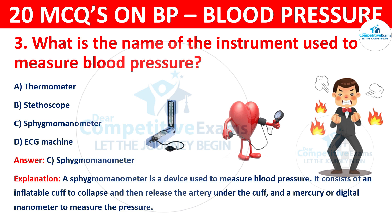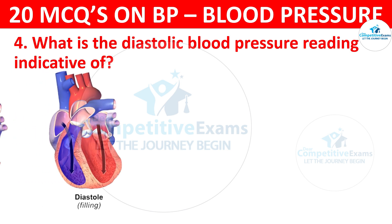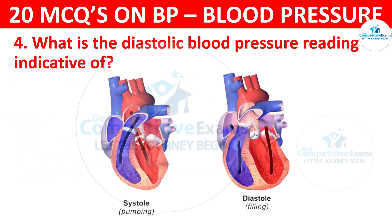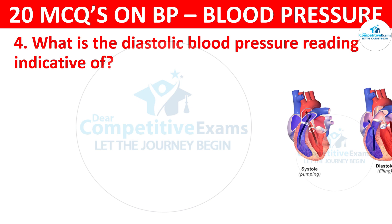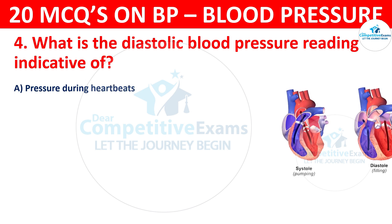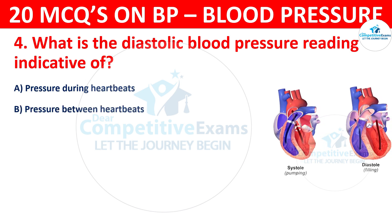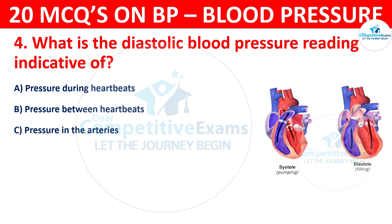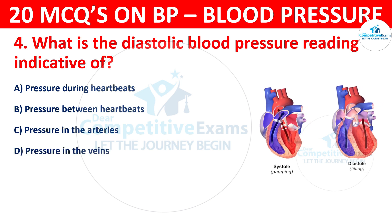Question 4. What is the diastolic blood pressure reading indicative of? Your options are: Pressure during heartbeats, Pressure between heartbeats, Pressure in the arteries, or Pressure in the veins?